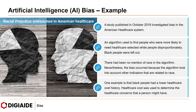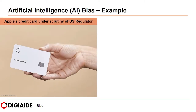One example is that black people had lower healthcare cost history. Healthcare cost was used to determine the healthcare concerns a person might have. However, black patients were found to have lower cost history than white people even when they shared the same ailments. The final example of AI bias is Apple's credit card coming under scrutiny by the US regulator.